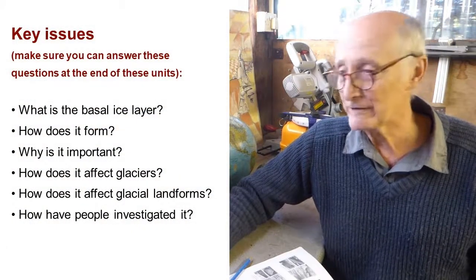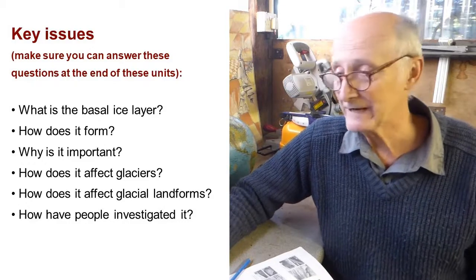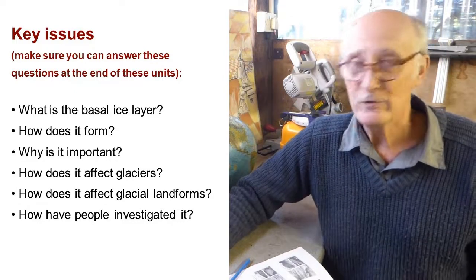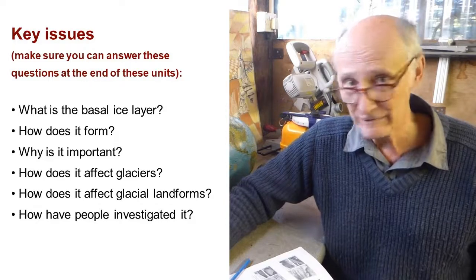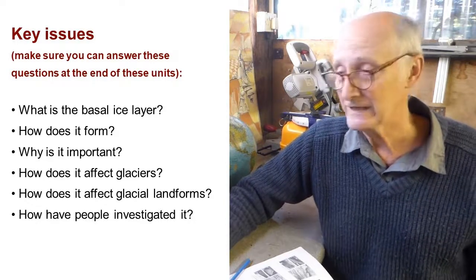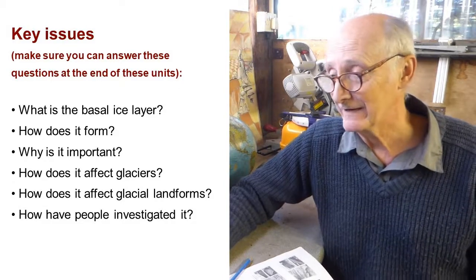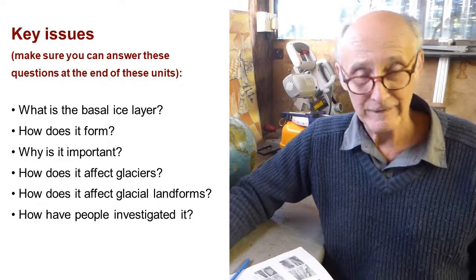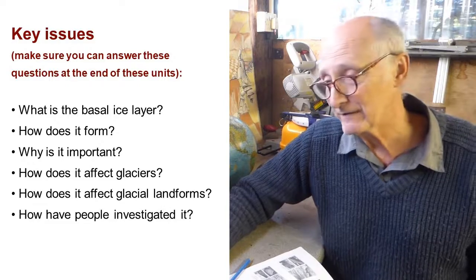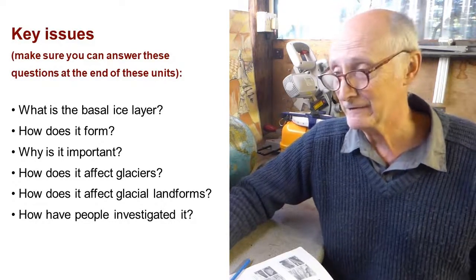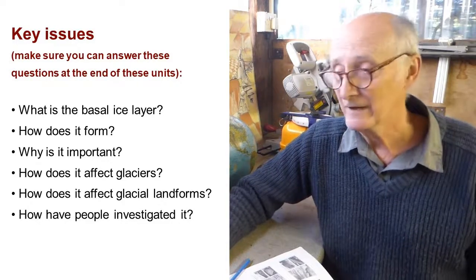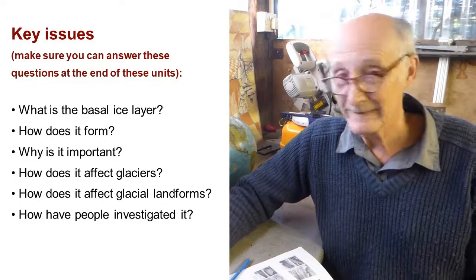There are a number of things you need to get your head around talking about basal ice, and by the time we finish these sessions these are the kinds of questions you should be able to answer: What is the basal ice layer? How does a basal ice layer form? Why is it important? How does it affect glacier dynamics? And how does it affect glacial geomorphology and glacial landforms? Also think of this as a nice case study of the science of glaciology — make sure you can explain how the study of the basal ice layer has developed over the last many decades.